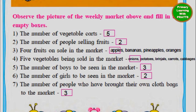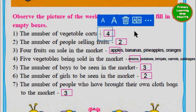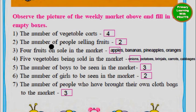Keep your textbooks open so you can see the picture as we go through the questions. The first question is: the number of vegetable carts. We can see there are two carts, but one cart is selling fruits, so we will not count that. The carts selling vegetables are four.